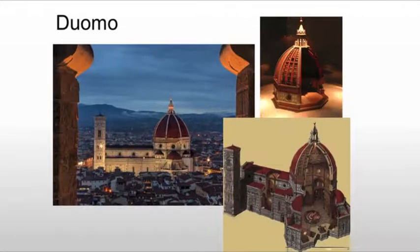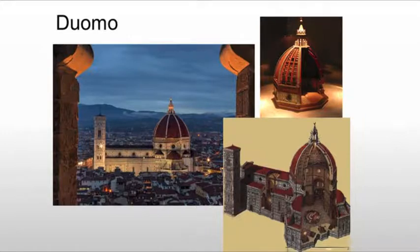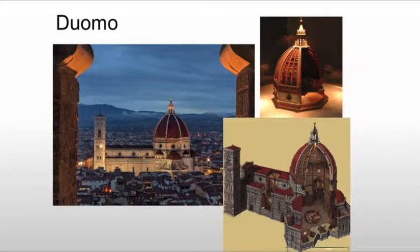Based on the Pantheon, we see other domes built during the Renaissance. All of these architects will go to Rome and study the Pantheon before creating their own, such as the Duomo in Florence, Italy, where they use a similar system — putting everything under compression and then putting that lantern at the top to put a lot of weight through the system and make sure that we're not dealing with any tensile strength; we're only dealing with compression.